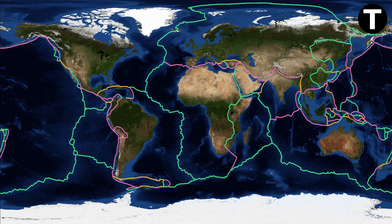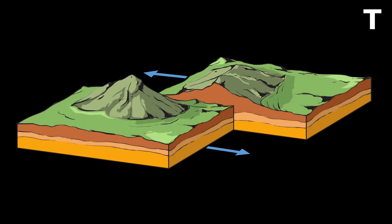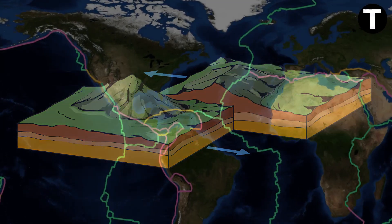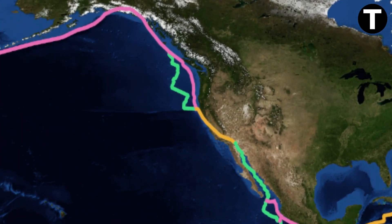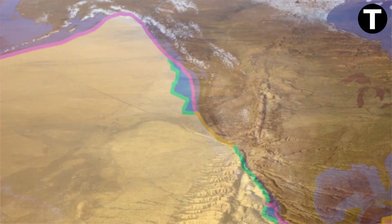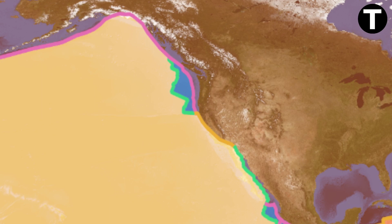Now let's explore transform plate boundaries. These are regions where tectonic plates slide past each other horizontally, represented in orange on the map. Imagine two colossal puzzle pieces, each representing a tectonic plate, fitting together along a jagged seam. These puzzle pieces are in constant motion, but the motion along transform boundaries is not smooth. The plates are locked in place until tensions build up, leading to sudden, powerful releases of energy, which we know as earthquakes. One notable example is the San Andreas Fault in California, where the Pacific Plate and the North American Plate are sliding past each other. This ongoing movement has contributed to a history of significant earthquakes.